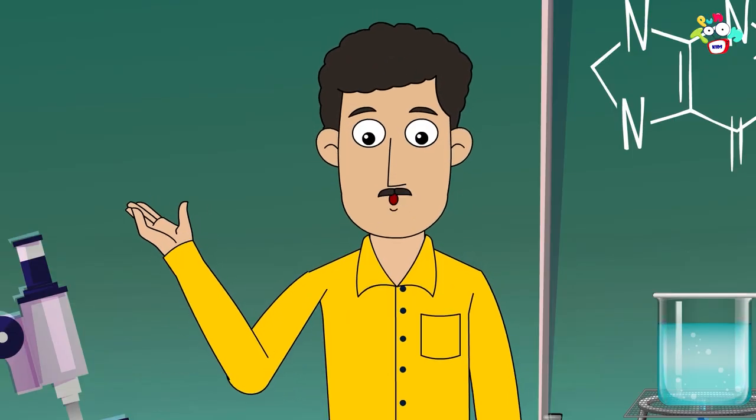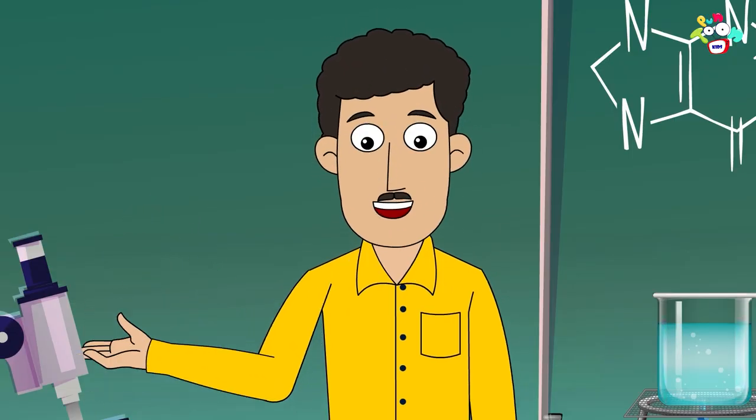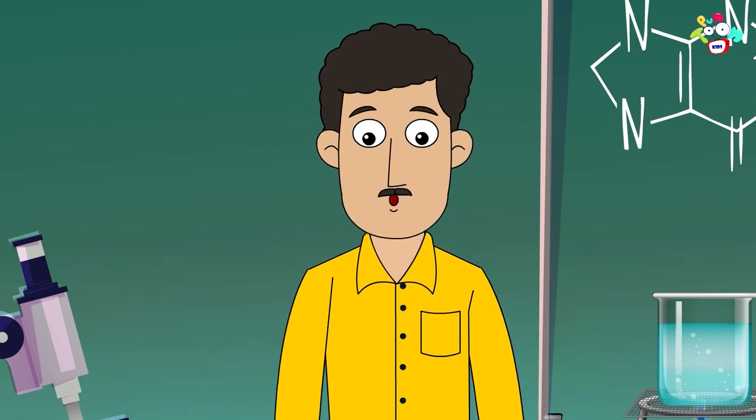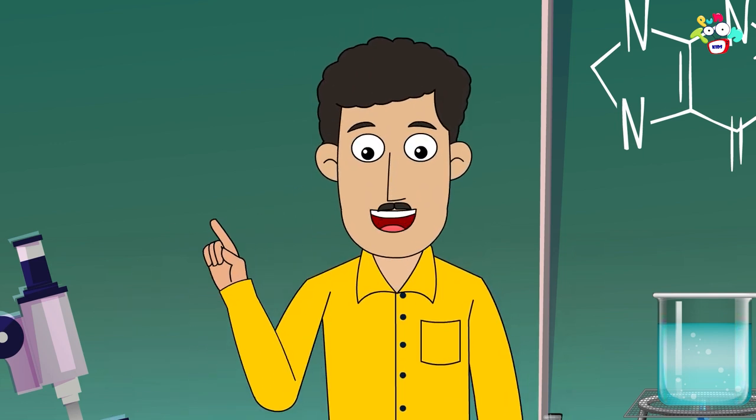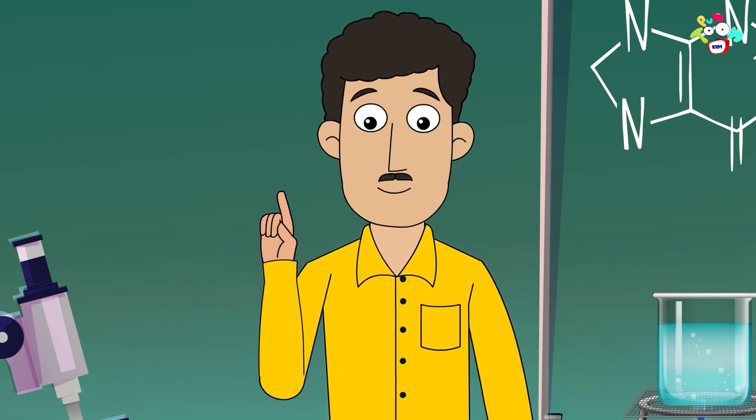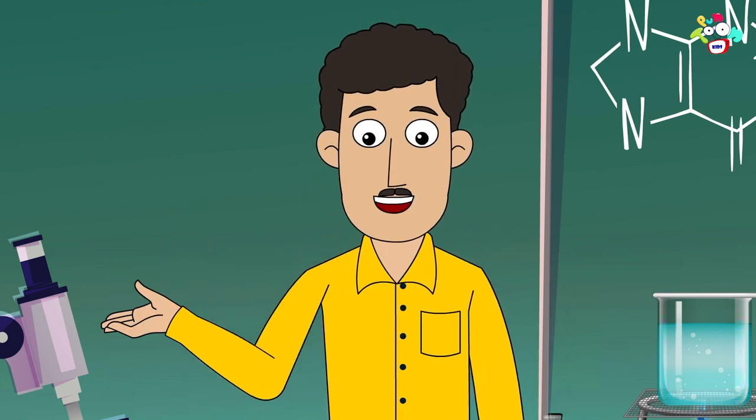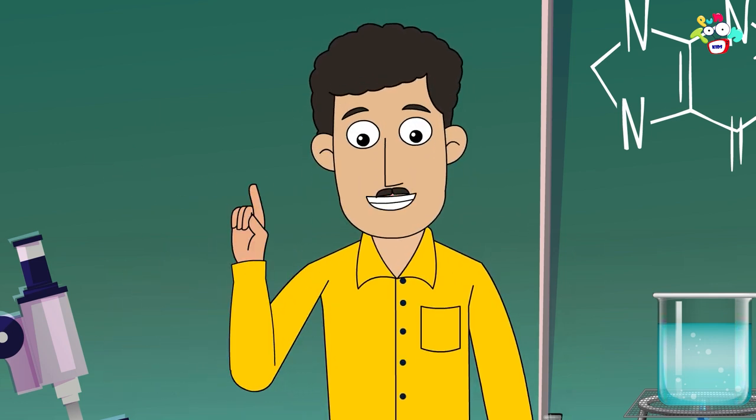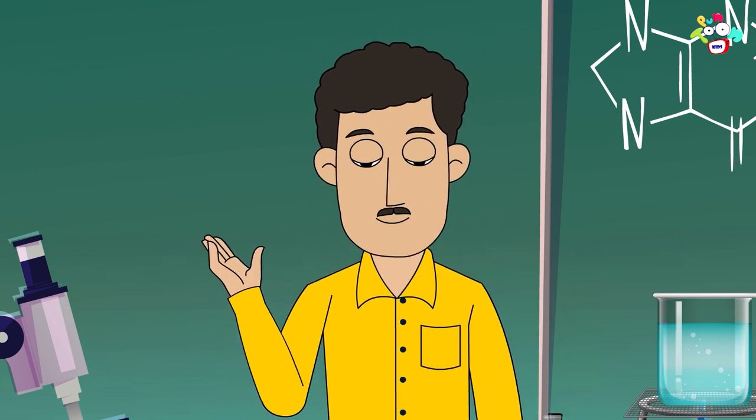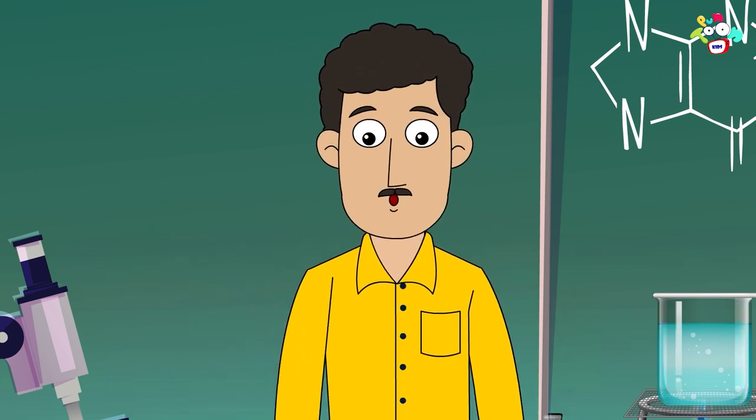Those are not colorful tubes. It is the color of the chemicals in them. Actually, they can also be called different types of glass utensils or equipment. Like burette, pipette. You don't have to remember all these names. You just have to understand how things work in a science lab.